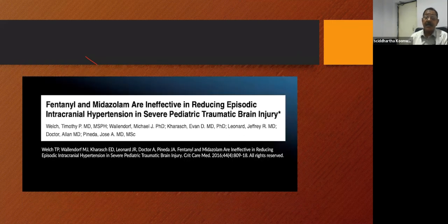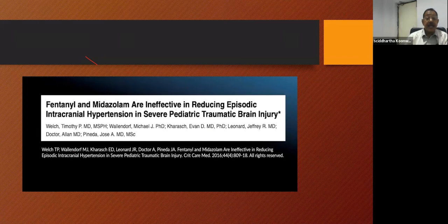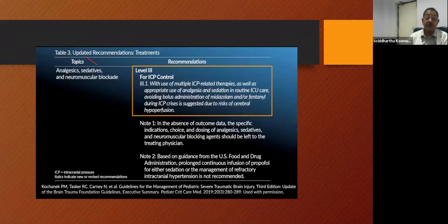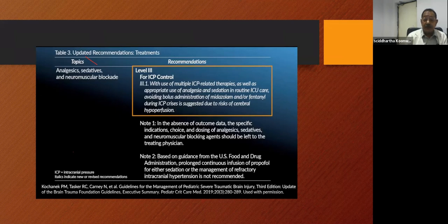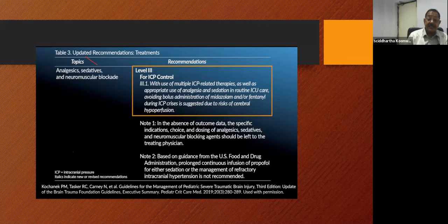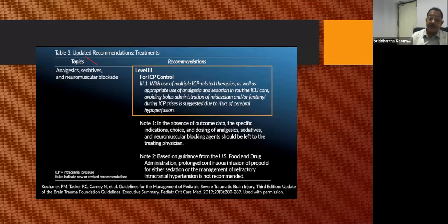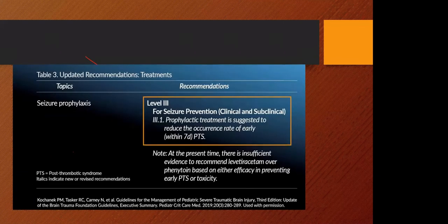Fentanyl and midazolam are ineffective in reducing episodic intracranial hypertension in severe pediatric TBI. Analgesic, sedative, and neuromuscular blockade — level 3 for ICP control — involves appropriate use of analgesia and sedation in routine ICU care, but avoiding bolus administration of midazolam and/or fentanyl during ICP crisis due to risk of cerebral hypoperfusion. In the absence of outcome data, specific indications, choice, and dosing of analgesic sedatives and neuromuscular blocking agents should be left to the treating physician. Prolonged continuous infusion of propofol for sedation or management of refractory intracranial hypertension is not recommended, per FDA guidelines.